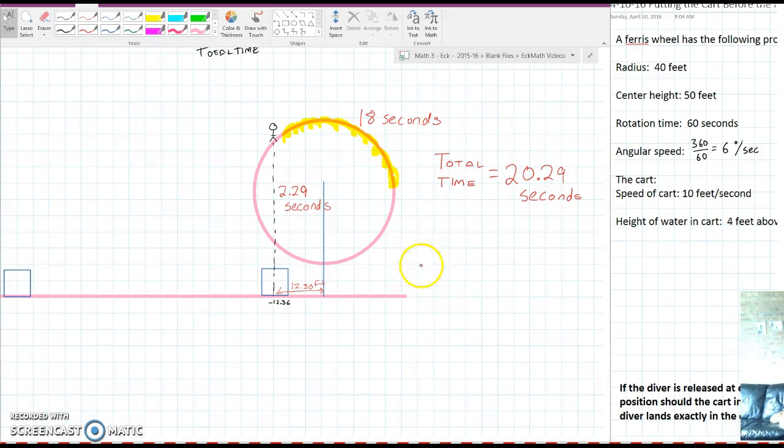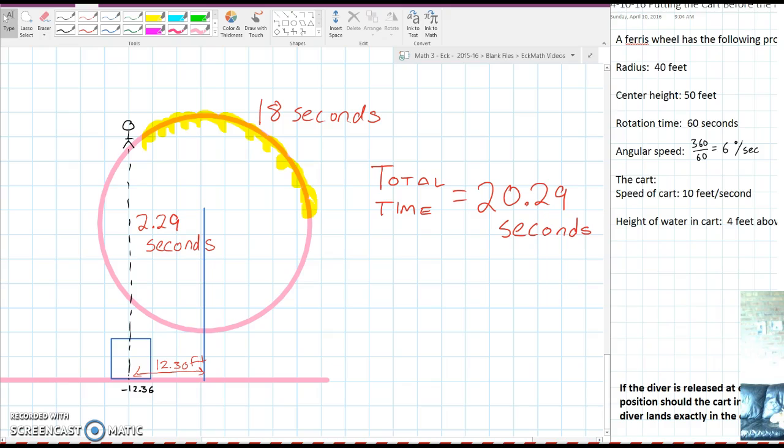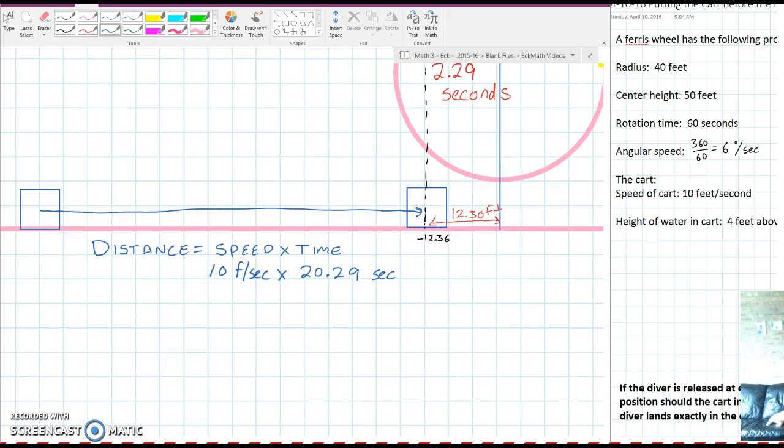Now let's talk about the times. I know that the diver was on the wheel for a time of 18 seconds and then was falling into the cart for a total time of 2.29 seconds. So the total time of the entire stunt had to be 20.29 seconds. We can use that time along with the speed of the cart to find the total distance that the cart travels from the start until the time when it catches the diver. Since the time is 20.29 and the speed is 10 feet per second, then the total distance the cart has to travel is 202.9 feet.